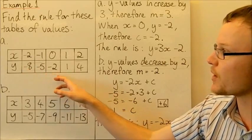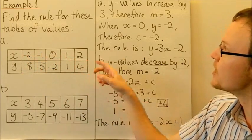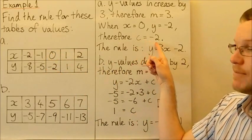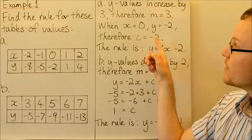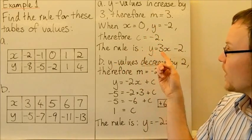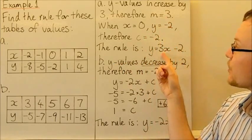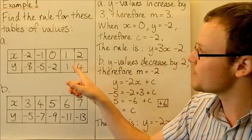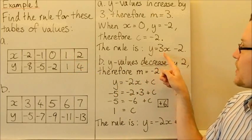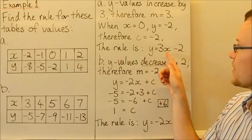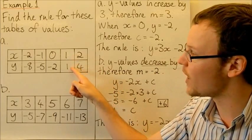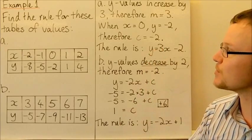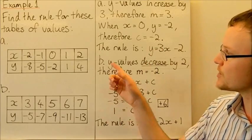They're all increasing by 3 each time as x increases by 1. When x is 0, y is equal to negative 2, so c must be negative 2. Our rule is y equals 3x minus 2. Checking with x equals 1: 3 times 1 is 3, minus 2 is 1, and we get 1 for y — correct.